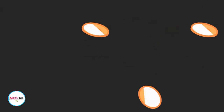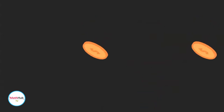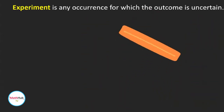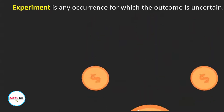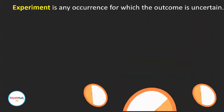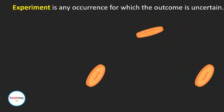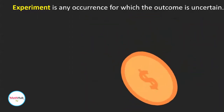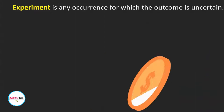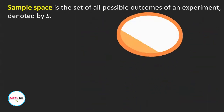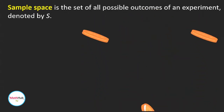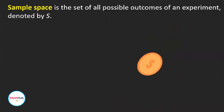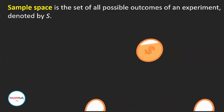Suppose you toss a coin. Although it is equally likely to land either heads up or tails up, the actual outcome is uncertain. Any occurrence for which the outcome is uncertain is called an experiment. Thus, tossing a coin is an example of an experiment. The set of all possible outcomes of an experiment is called the sample space, and we denote that by capital letter S.